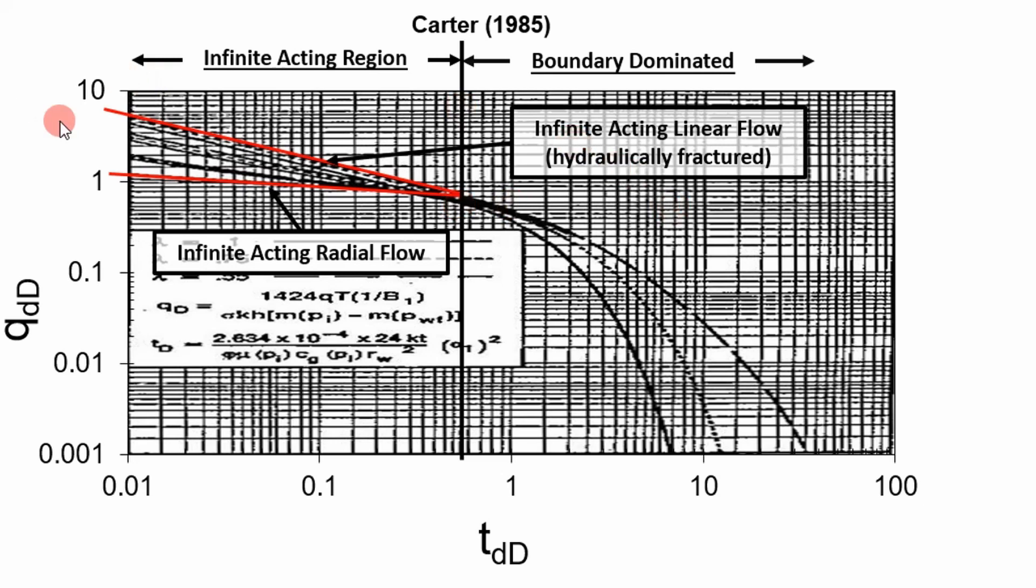If your data never reaches the boundary dominated region, you can't really proceed with characterizing your reservoir. And if you're in the boundary dominated region only, if your data just shows up in this region, then you want to use your rate time or rate cube analysis because your well is not seeing an infinite acting flow regime.